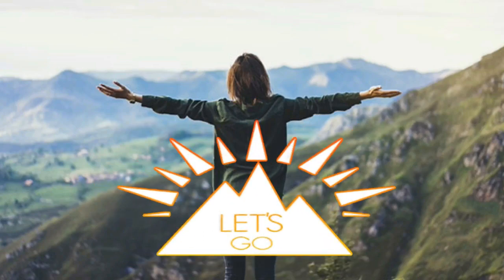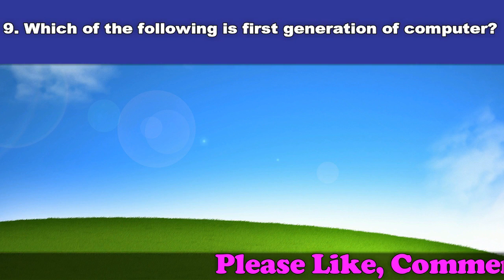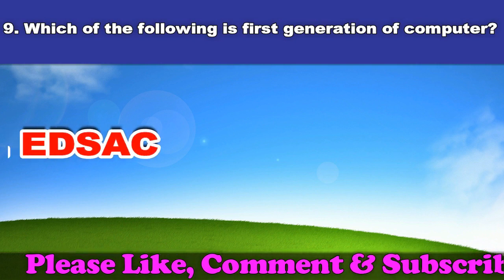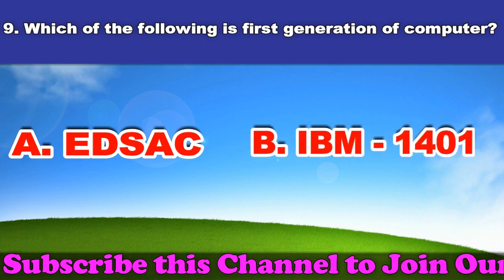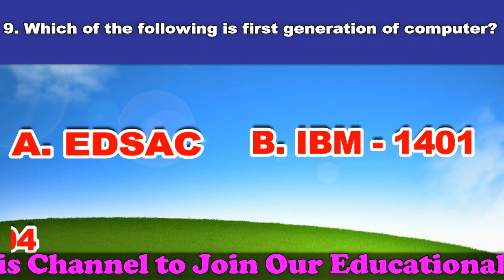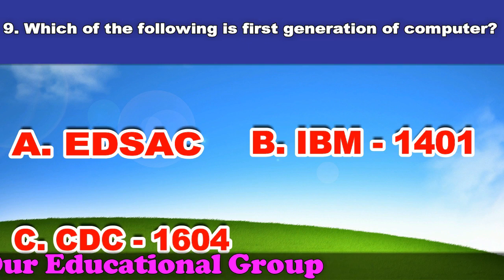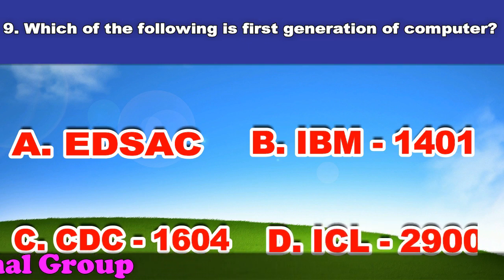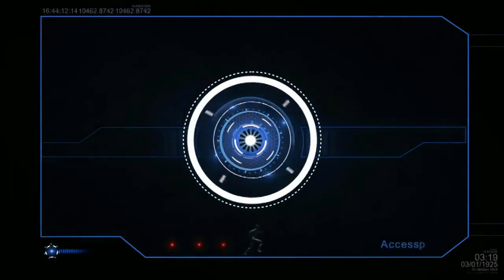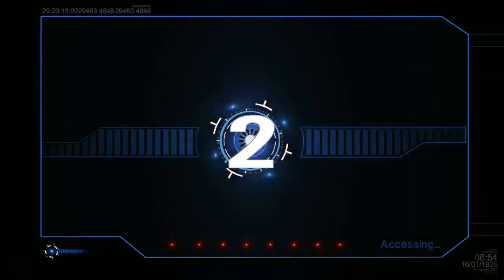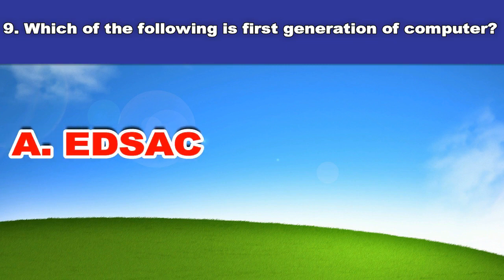Ninth question: Which of the following is first generation of computer? A. EDSAC. B. IBM 1401. C. CDC 1604. D. ICL 2900. And the answer is EDSAC.